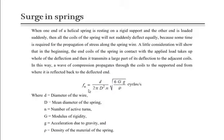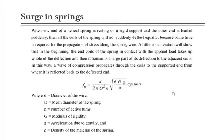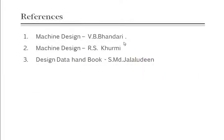The natural frequency of the spring can be found using the relation: f = (d / (2*pi*D^2*n)) * sqrt(G*g / rho) cycles per second, where d is the diameter of the wire, D is the mean diameter of the spring, n is the number of active turns, G is the modulus of rigidity, g is the acceleration due to gravity, and rho is the density of the spring material. In the coming class I will teach problems regarding these derivations. For reference, you can use Machine Design by V.B. Bhandari.